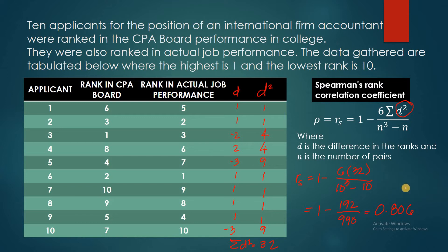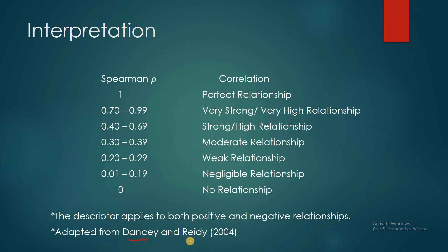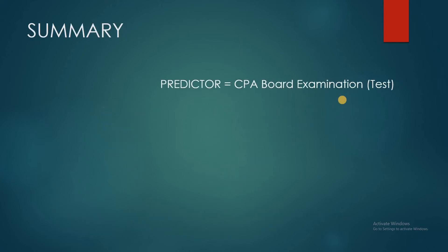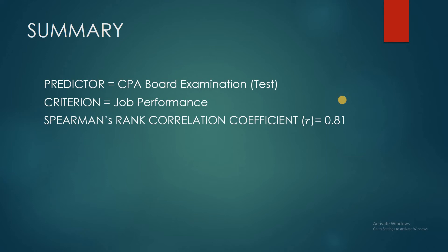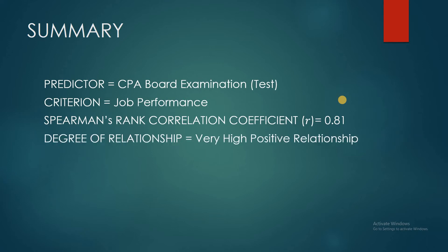What is the interpretation of this computed coefficient, 0.806? We're going to use the interpretation by Dancey and Reidy in 2004. The descriptor applies to both positive and negative relationships. Our R value is 0.806 — it's positive — so it belongs to this range, and therefore our interpretation is very high positive relationship. So the predictor is the CPA board examination, the criterion is job performance, the Spearman's rank correlation coefficient is 0.81, and the degree of relationship is a very high positive relationship.